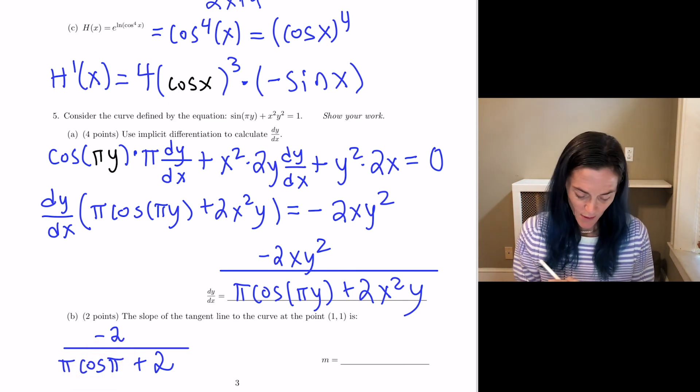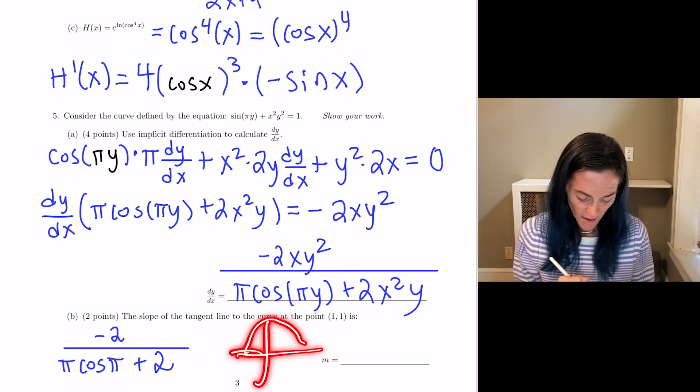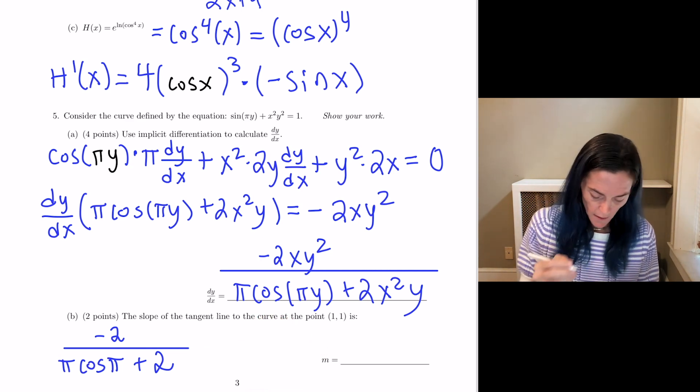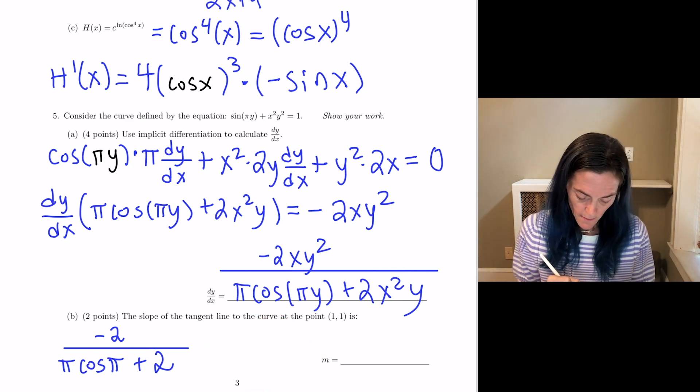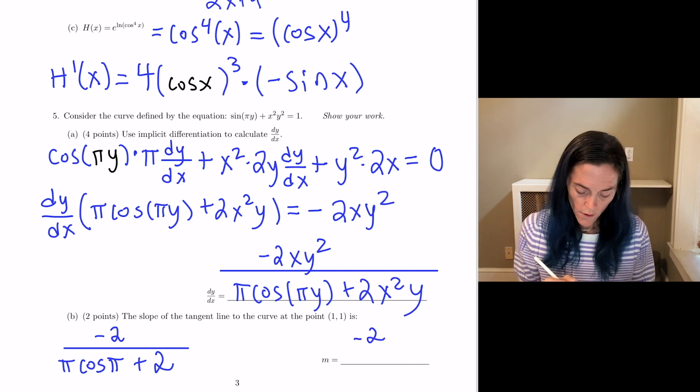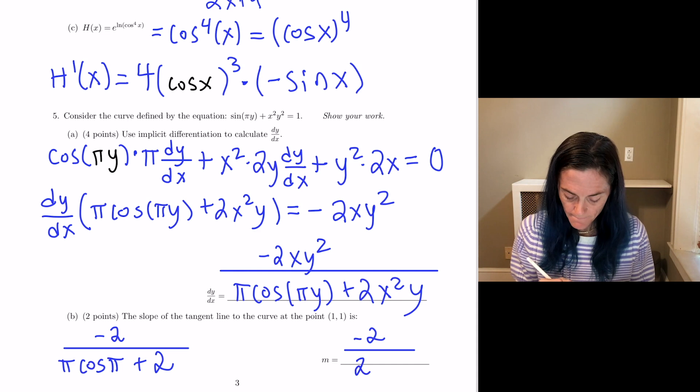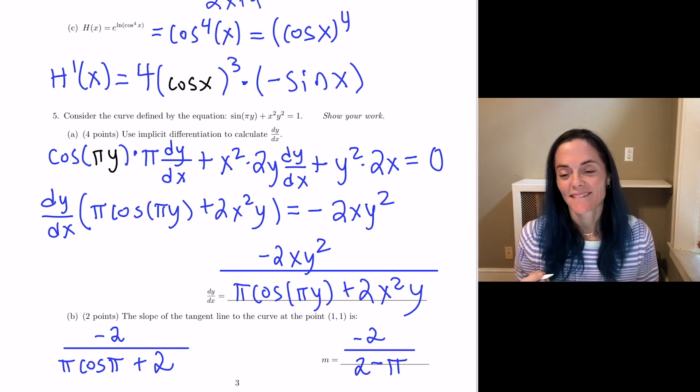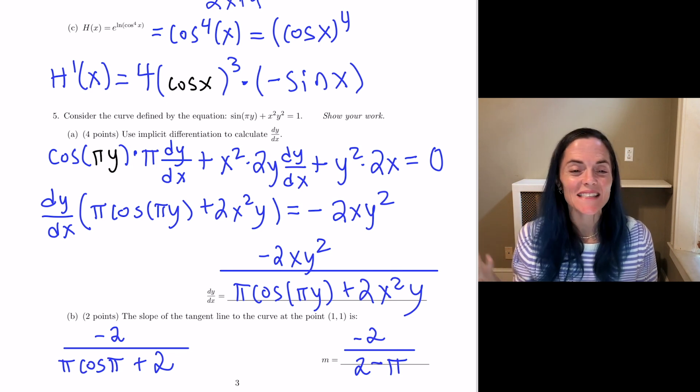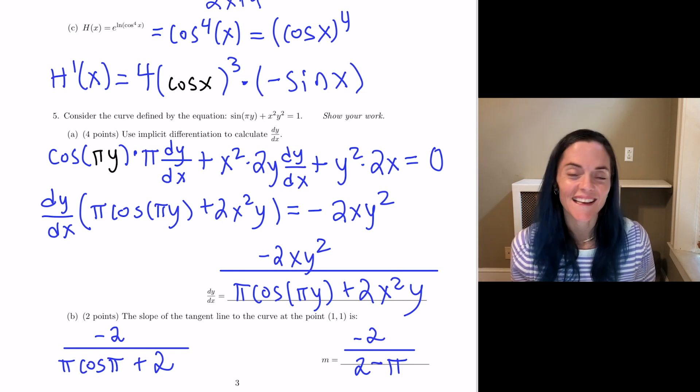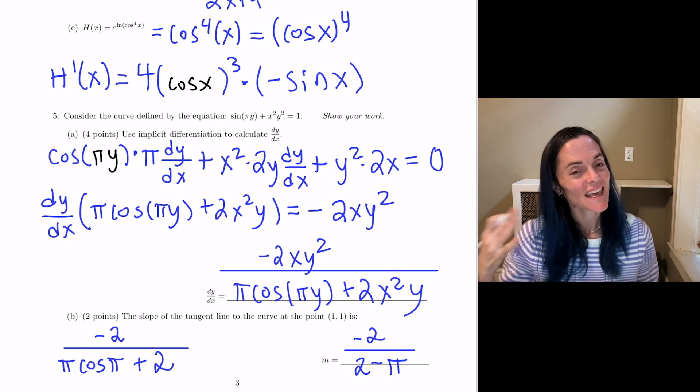Now, this is an answer, but we wouldn't leave our answer like this, because we need to evaluate the cosine of pi. So, pi, if you think about the unit circle, is out here, where the cosine is minus 1. So, my final answer is minus 2 over 2 minus pi. Okay, well, this is the end of this page from our final exam. All of these questions are relevant to our quiz 4. Give this some extra practice. Thank you so much, class.